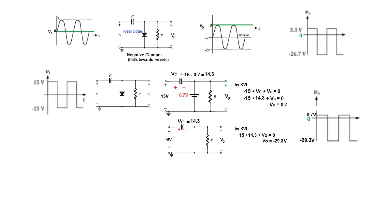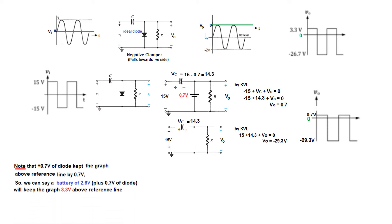The question requires 3.3 volts. When we had 0.7 volts from the diode, the graph moved 0.7 volts up. To move it to 3.3 volts, we need a total of 3.3 volts, so we add a battery. Since the 0.7 volt diode kept the graph 0.7 above the reference, adding a 2.6 volt battery in series with the diode — making 2.6 plus 0.7 equal to 3.3 — will keep the graph 3.3 volts above the reference.